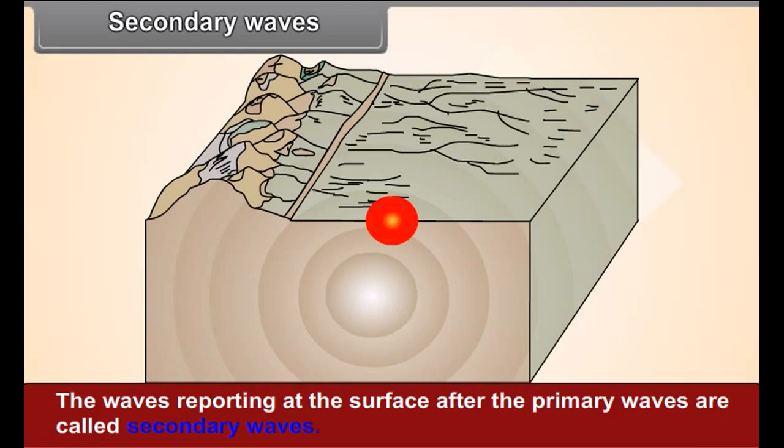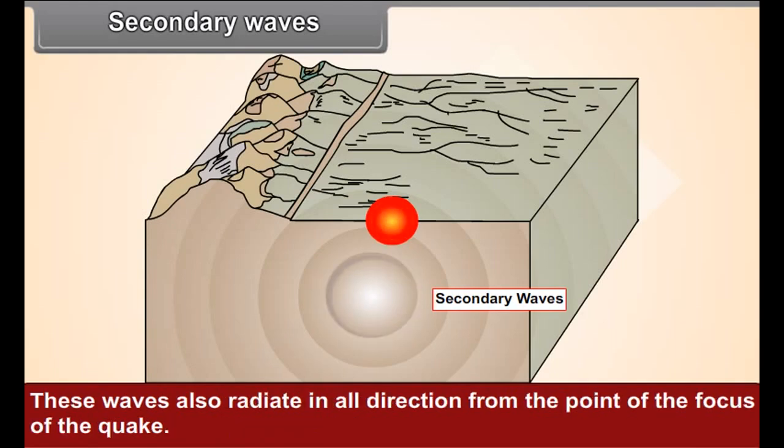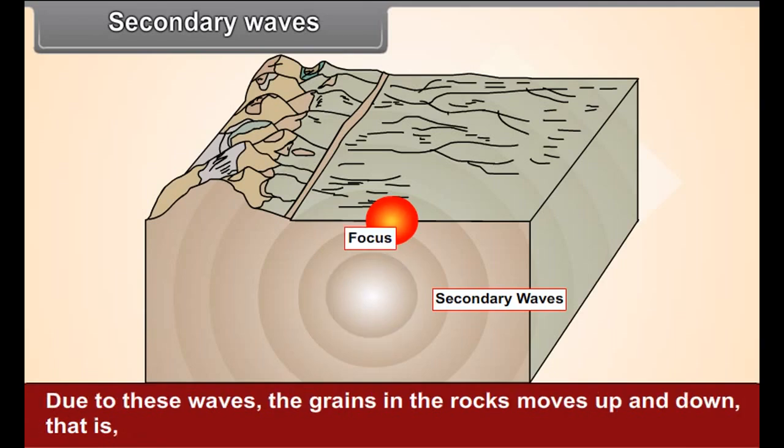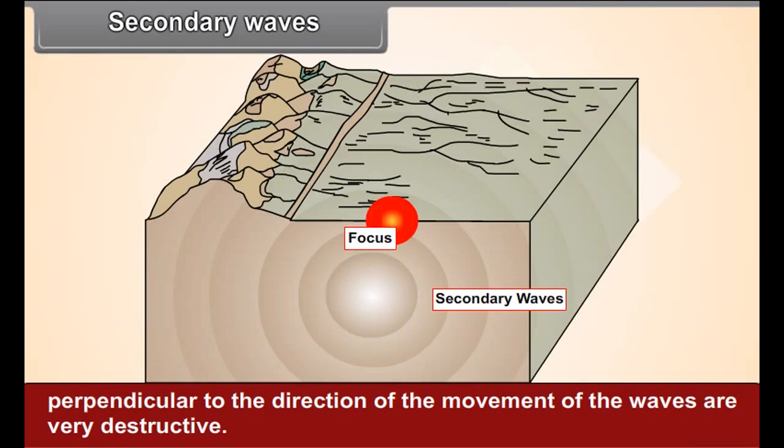Secondary waves - The waves reaching the surface after the primary waves are called secondary waves. These waves also radiate in all directions from the point of the focus of the quake. Due to these waves, the grains in the rocks move up and down, i.e., perpendicular to the direction of the movement of the waves. Therefore, these waves are very destructive.